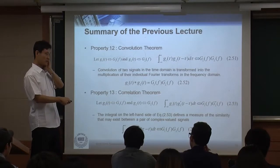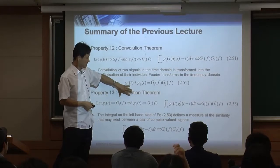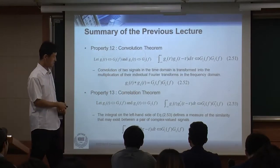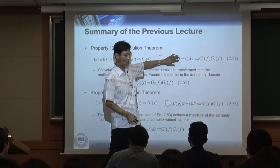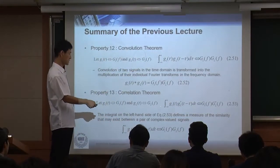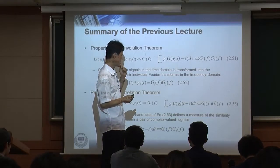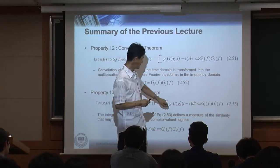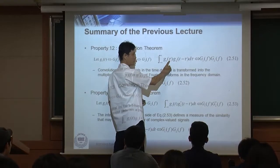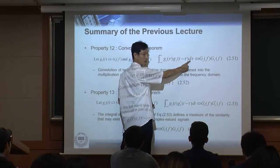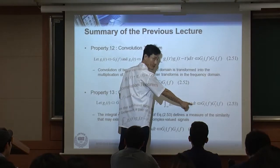We didn't discuss the correlation theorem last week — we'll talk about correlation today. The correlation theorem can be compared with the convolution theorem. The only difference between the convolution theorem and the correlation theorem is the integration variable — here you have τ and integrate with respect to τ, and in the other you have t integrating with respect to t.